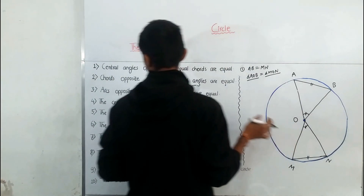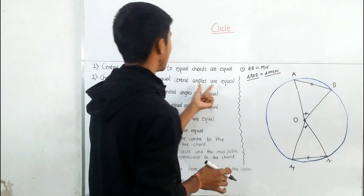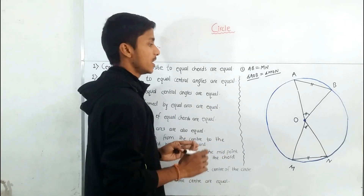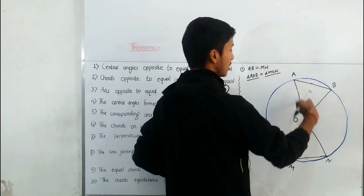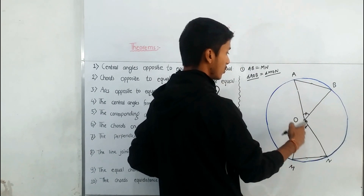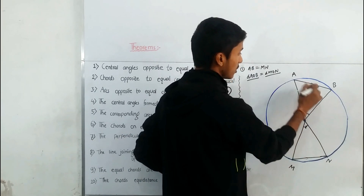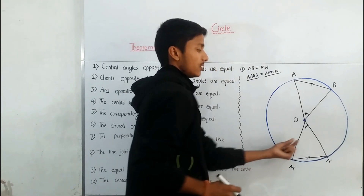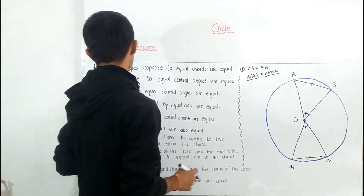Theorem 2 is the converse of Theorem 1: chords opposite to equal central angles are equal. If central angle AOB and central angle MON are equal, then the chords opposite to these angles will also be equal — so chord AB will be equal to chord MN.